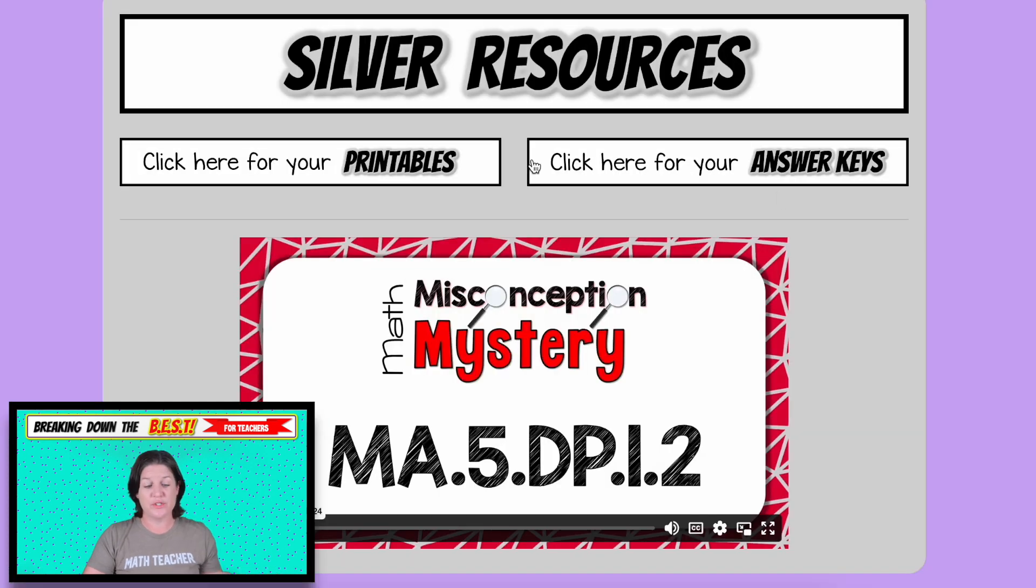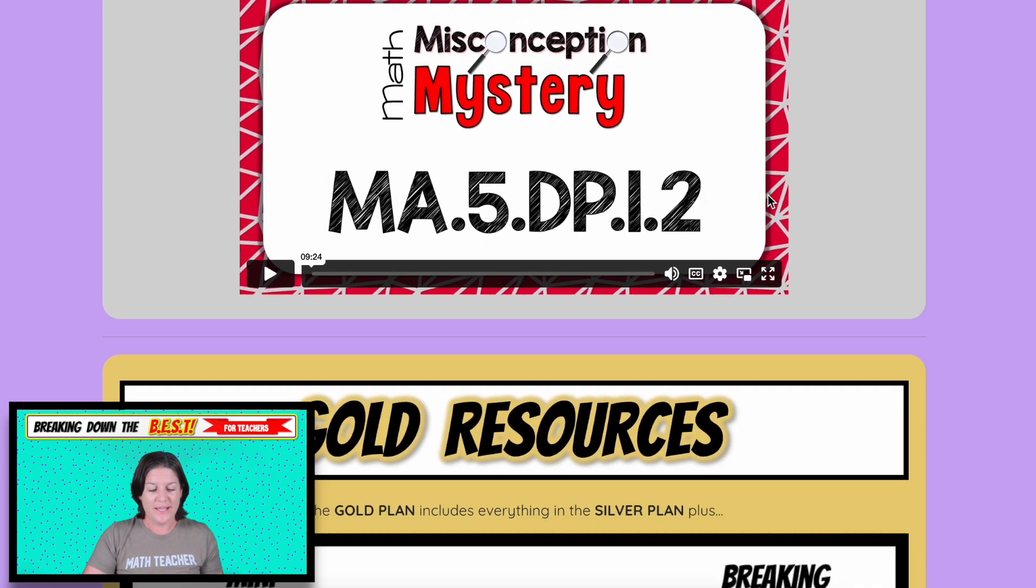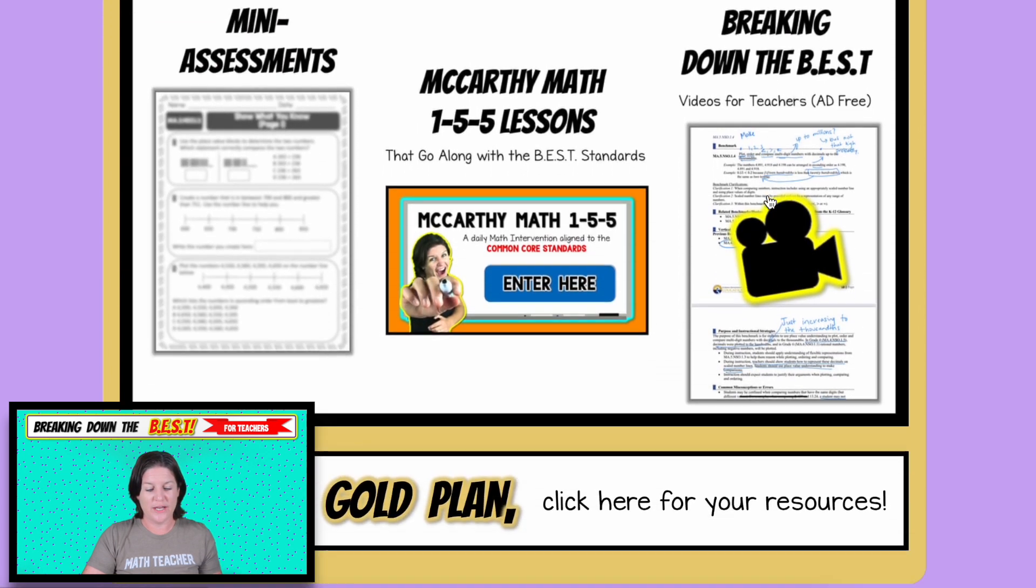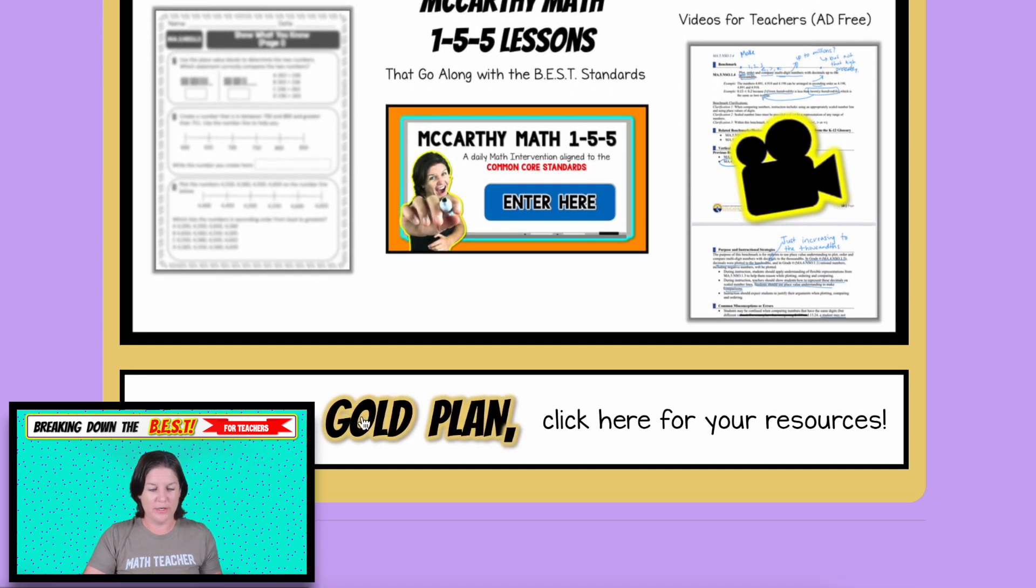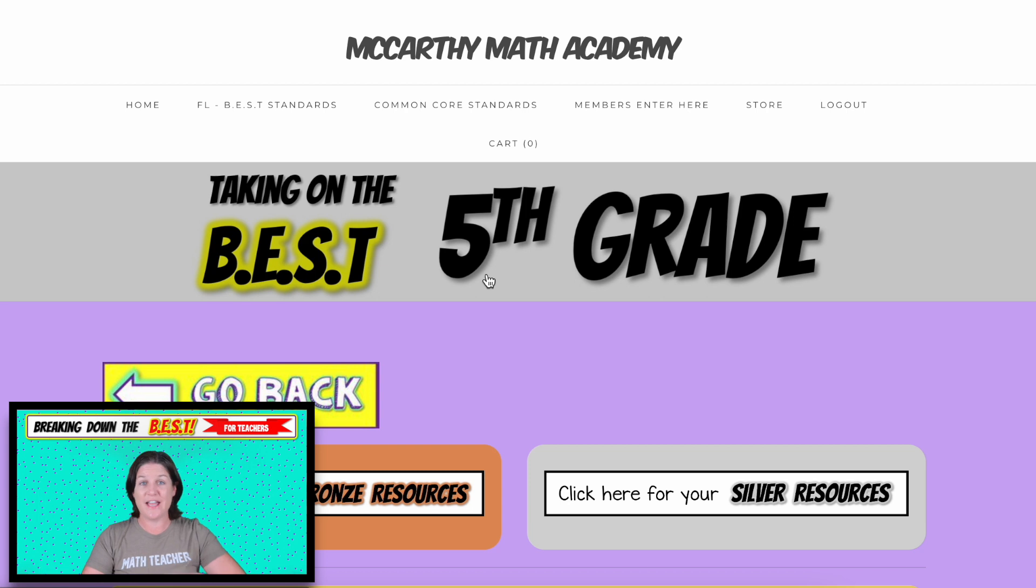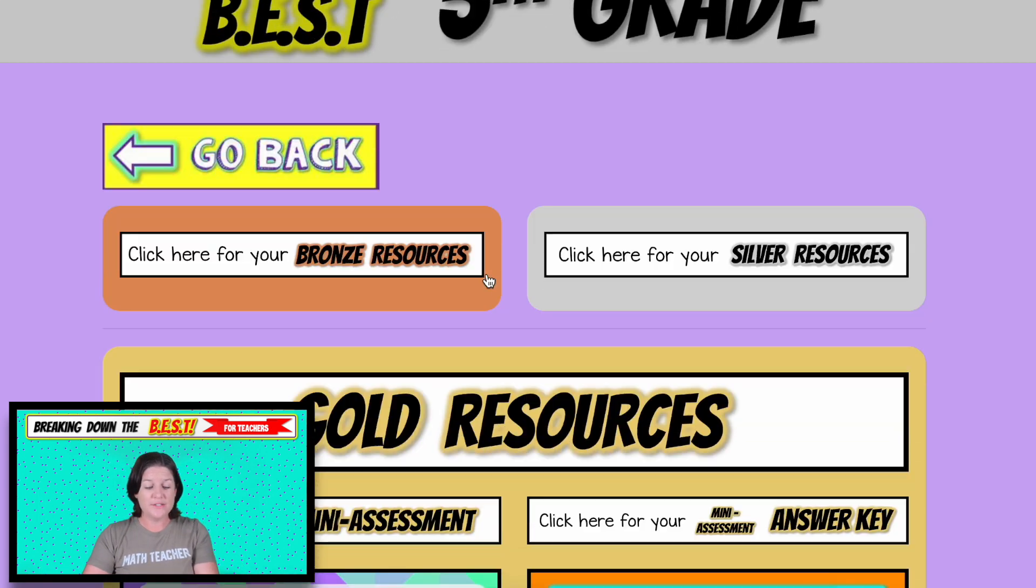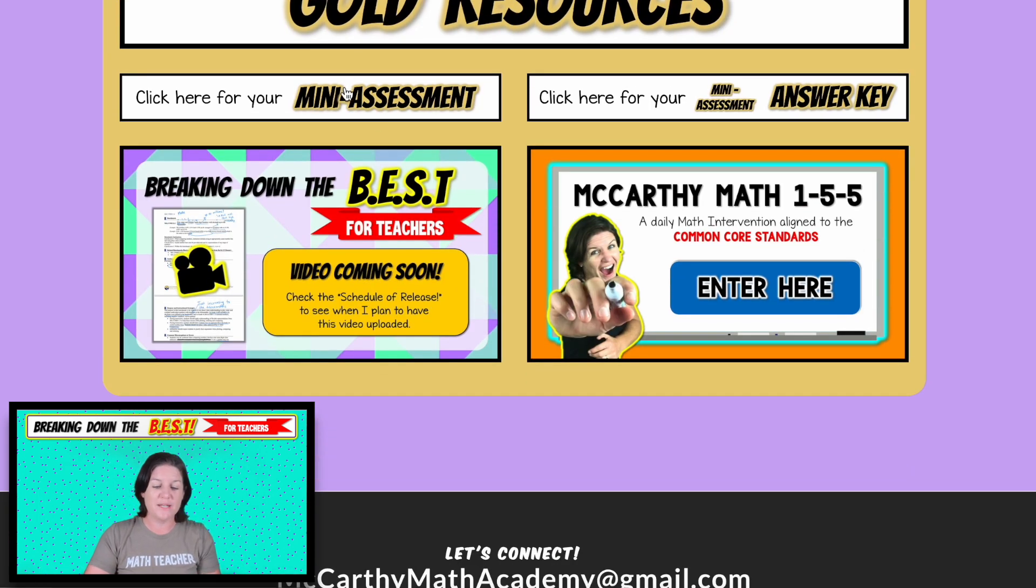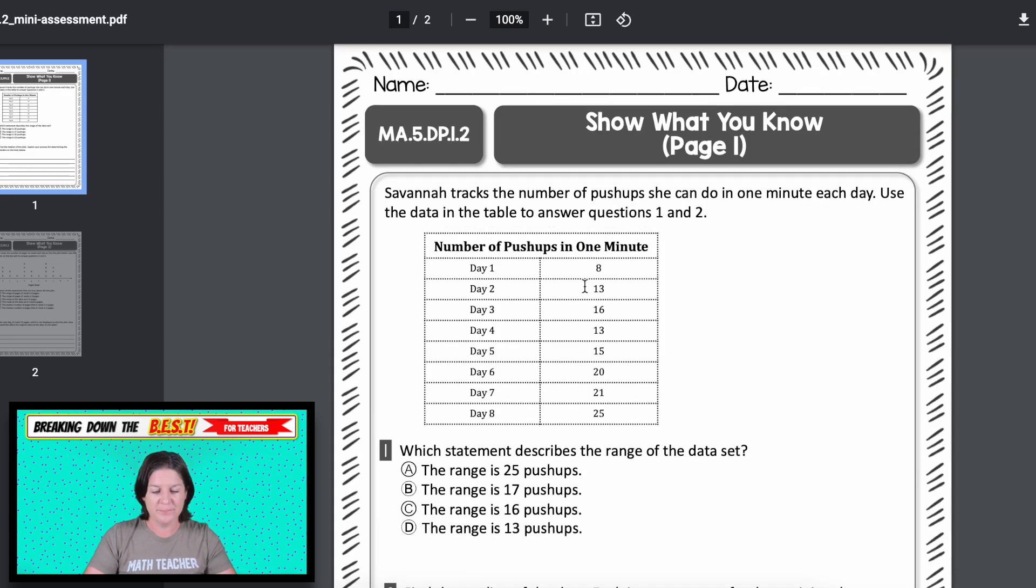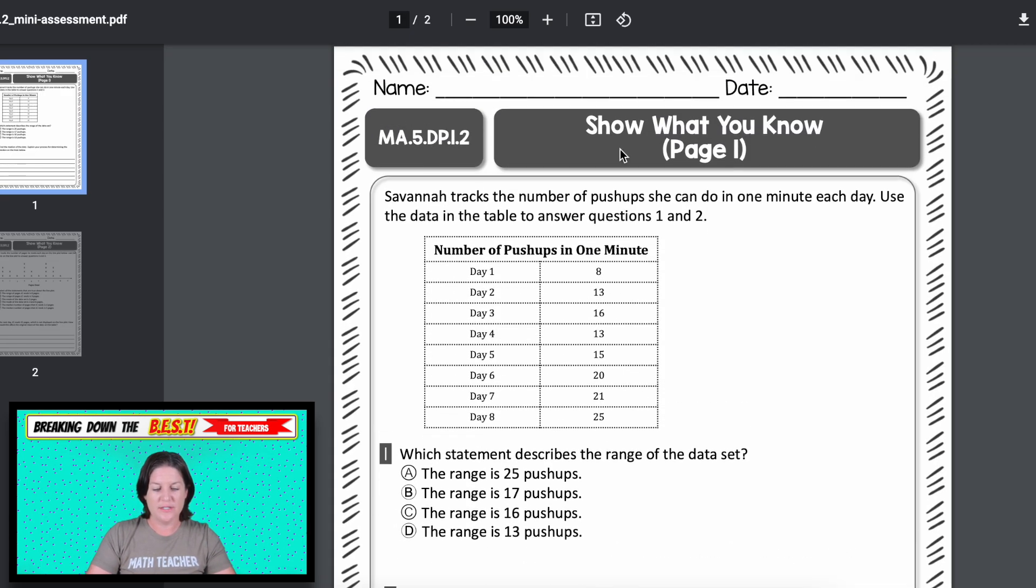All of the printables that we just went over, there's an answer key right there. So if you are like, what do I do? There's an answer key right there to guide you. And then if you are a gold plan member, you can click here because you have access to everything we've gone over. Plus, you also have access to a mini assessment for every standard. You can see the standards right up here. It says show what you know, so you can use this as a mini assessment, or you can just use it as extra practice, whatever you want to do.